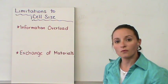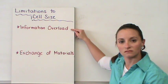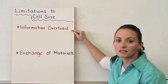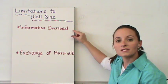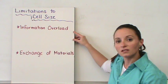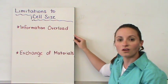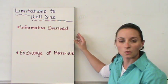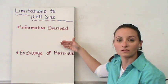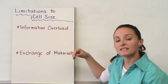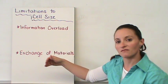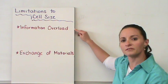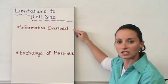We can't add that DNA, so there's only a certain size that DNA can control. After that point, we get too much information needed within the cell and the DNA can't control that. So the cell needs to remain small to handle all of the information that the DNA is able to give out. If not, the DNA can't give out enough information for the cell and the cell stops functioning. So information overload is the first limitation to cell size.